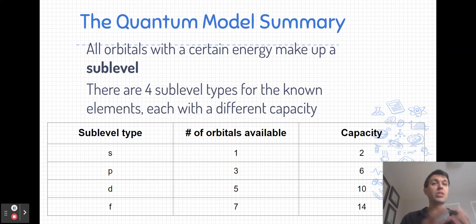All the orbitals that have the same energy make up what's called a sublevel, and we described four sublevel types for the known elements. An s-type sublevel, when l is equal to zero, has only one orbital available. A p-type sublevel, l is equal to one, has three orbitals available, and so on. Since each orbital can hold two electrons, this gives a capacity for every sublevel type. Every s-type sublevel has a capacity of two electrons found in one orbital, whereas an f-type sublevel has a capacity of 14 electrons found in seven distinct regions in space or seven orbitals.